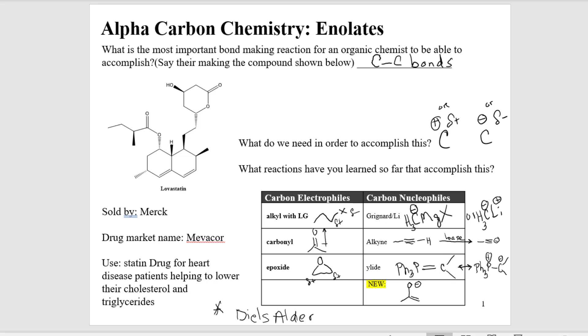And enolate chemistry serves a big role in the industry of making carbon skeleton frameworks. And you can see lovastatin here sold by Merck on the left-hand side. This is a statin drug used to help lower cholesterol and triglycerides for people with high blood pressures and heart disease. And I just want you to notice the six-membered ring here.